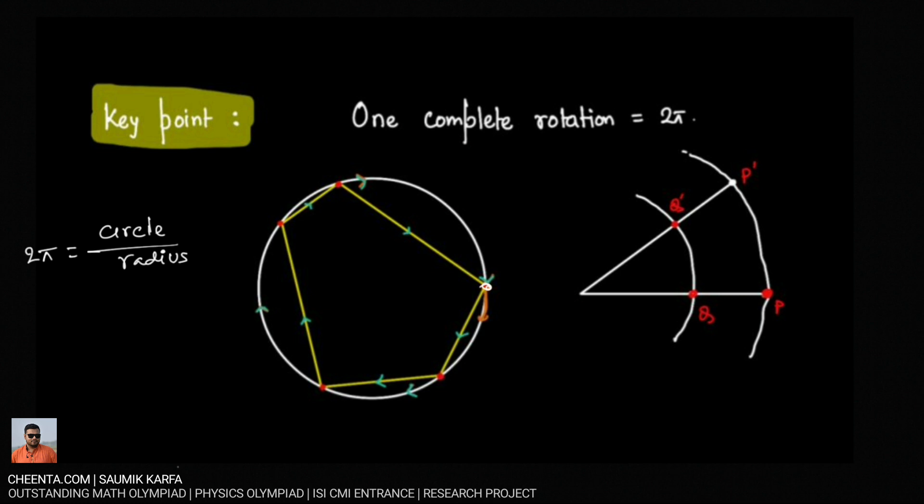So the same thing can be done by taking some discrete turns as well. When we are moving on a circle we are taking continuous turn at every point we are taking a very small amount of turn but if we don't do that, rather if we first come here by a straight line then we take a turn and come here. So the turn that we actually made is this turn.